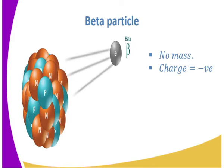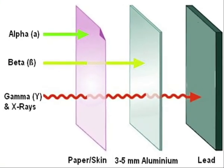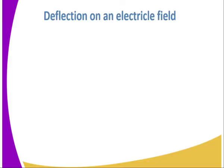The first property is penetration power — how do these radiations penetrate matter? Alpha is stopped by paper, so its penetration power is the lowest. Beta particles are stopped by an aluminum foil. Gamma radiation, on the other hand, has the highest penetration power and is stopped by a very thick lead block of very high density, or alternatively by a concrete wall.